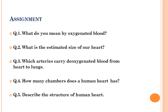At the end of lecture number 4, there is a simple assignment for you. Question 1: What do you mean by oxygenated blood? Question 2: What is the estimated size of our heart? Question 3: Which arteries carry deoxygenated blood from heart to lungs? Question 4: How many chambers does a human heart have? Question 5: Describe the structure of human heart — for this question, you must draw the structure of the heart and label it properly. You can write answers to these questions in your rough notebook and show them to your teacher when you meet.